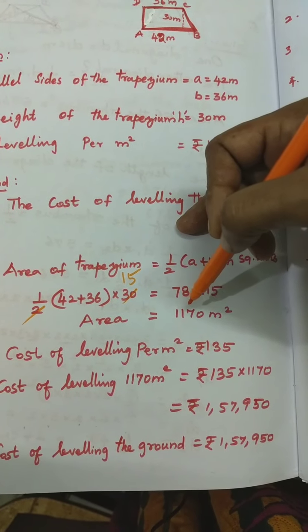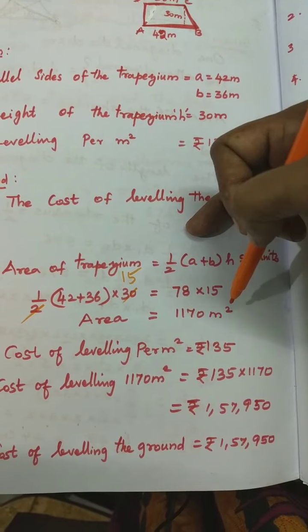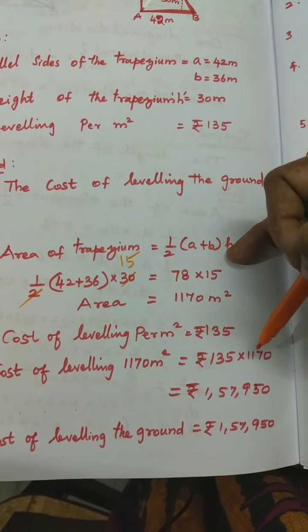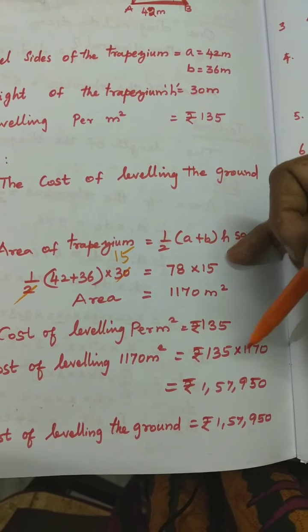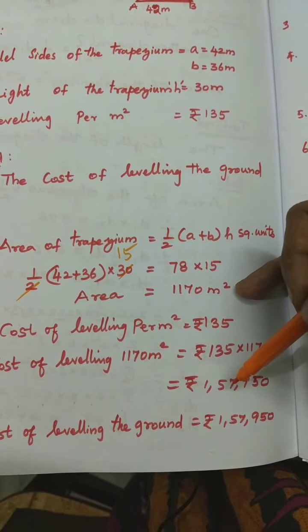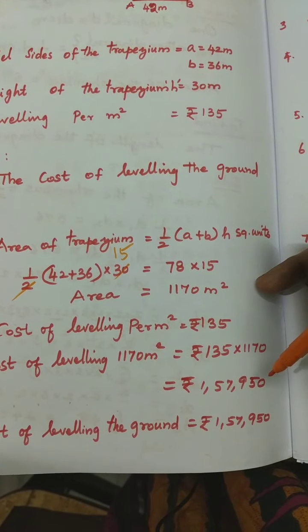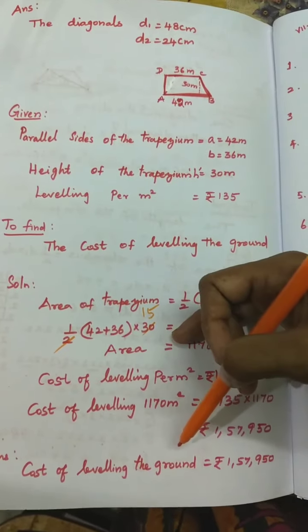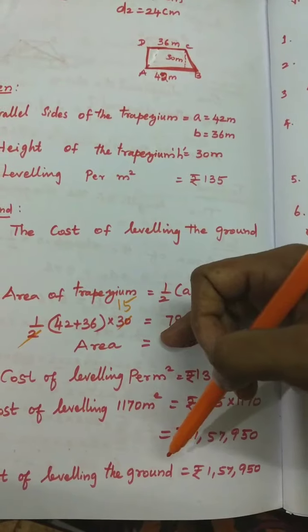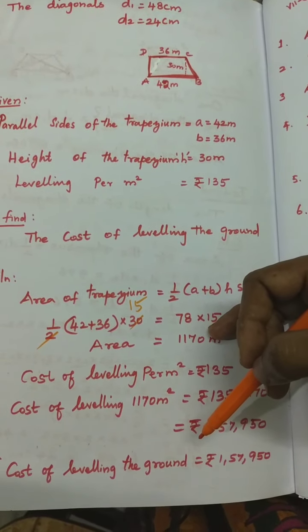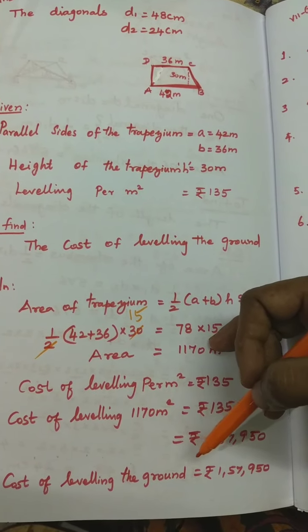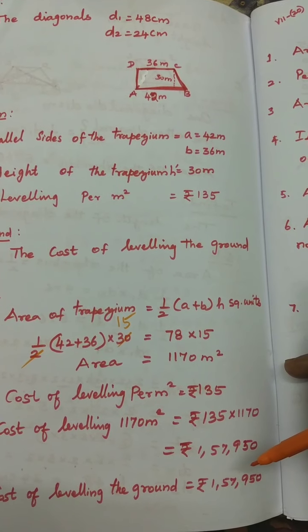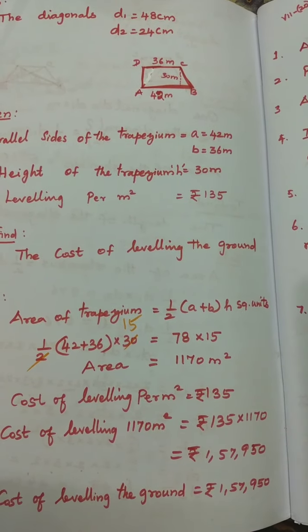For 1170 square metres: cost = ₹135 × 1170 = ₹1,57,950. Answer: the cost of levelling the trapezium-shaped ground is ₹1,57,950.